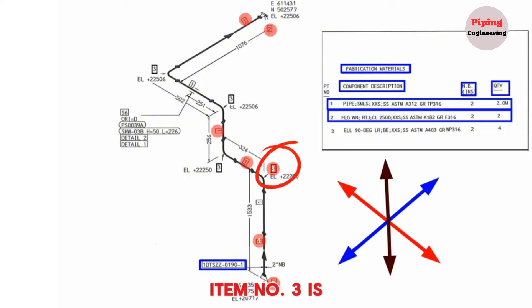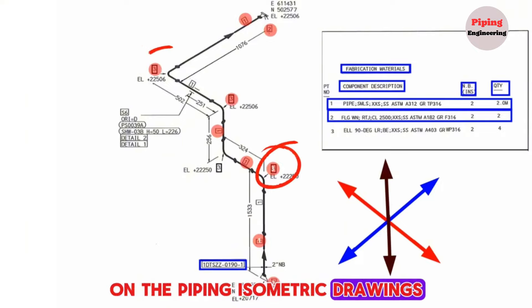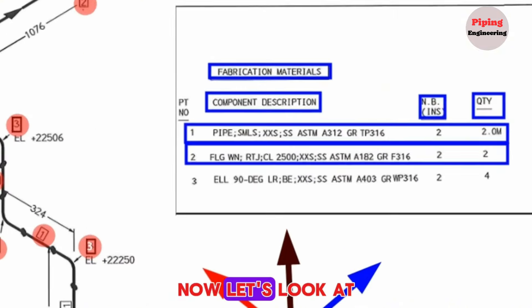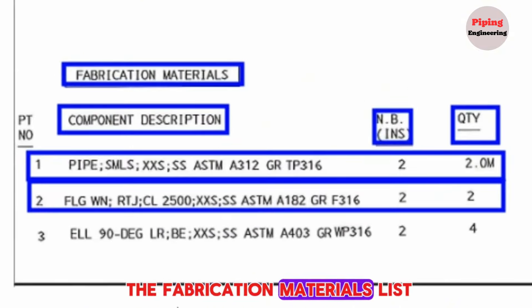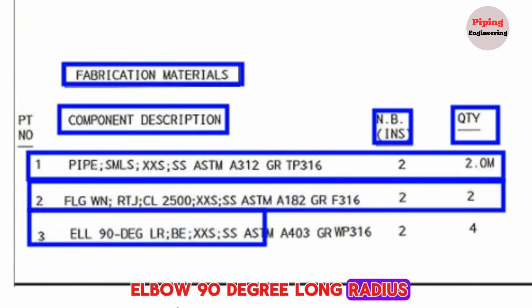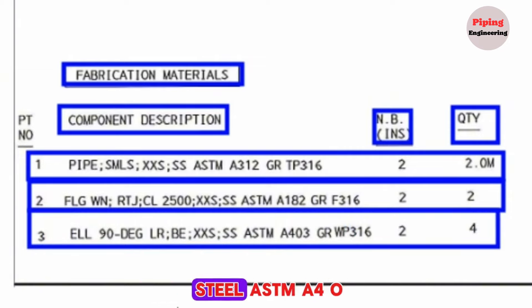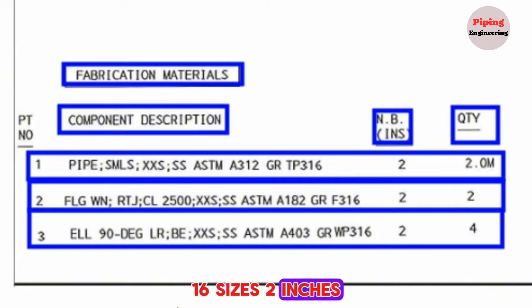Item number 3 is shown in four places on the piping isometric drawings. Looking at the fabrication materials list, item number 3 is an Elbow, 90 degree, long radius, Schedule XXS, Stainless Steel ASTM A403, Grade WP316, size 2 inches, and the quantity is 4 pieces.